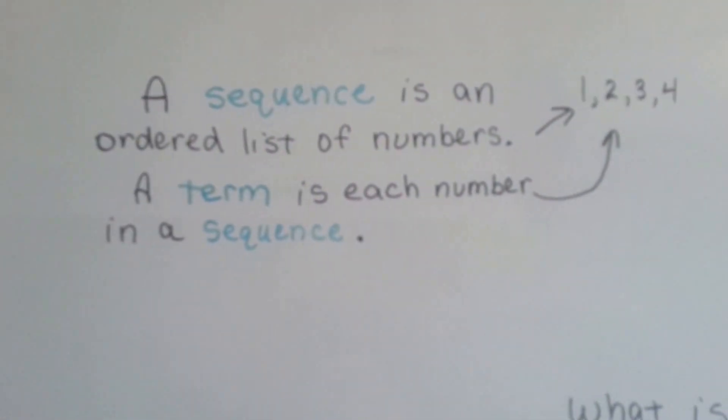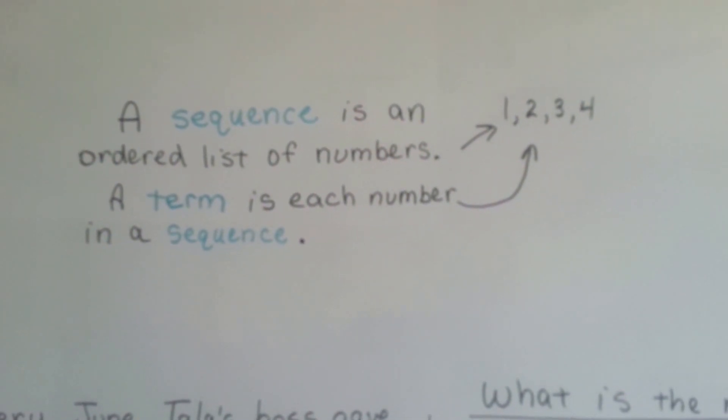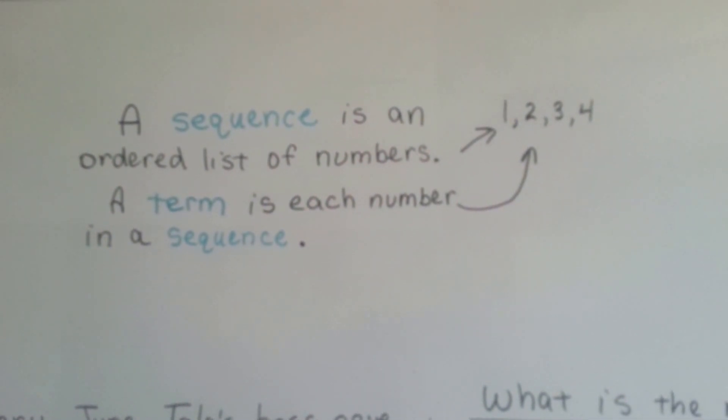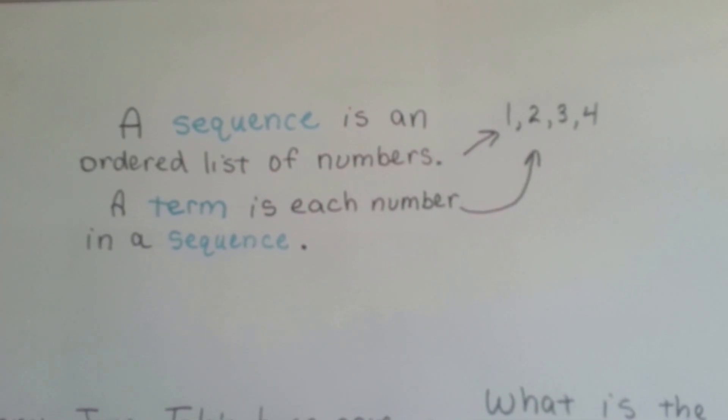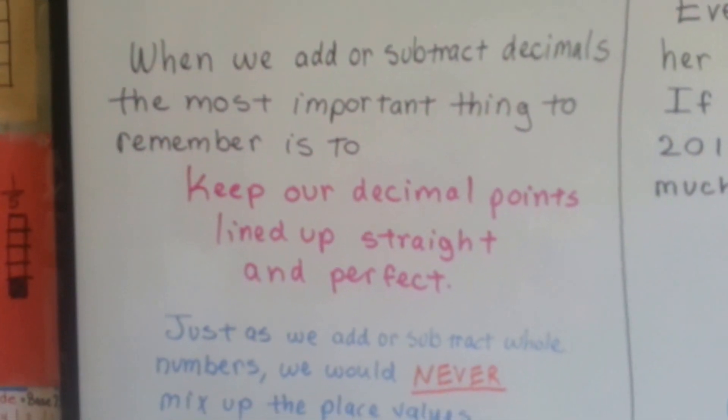A sequence is an ordered list of numbers, like 1, 2, 3, 4, and a term is each number in a sequence. So each of those numbers are a term. We covered this in the last video, but I want to go over it again.